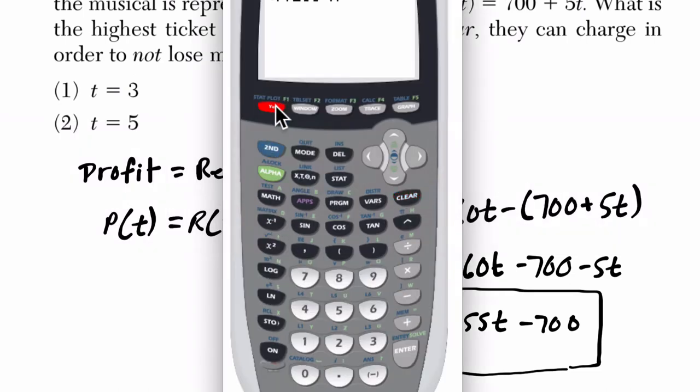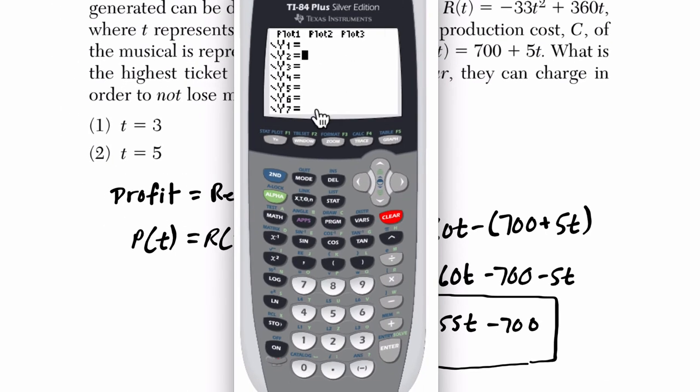So if I go to my graphing calculator, I press Y equals, I clear off any old equations I have. And the first thing we're going to do is enter that equation that we just got. So it's minus 33, we'll use X here, X squared.